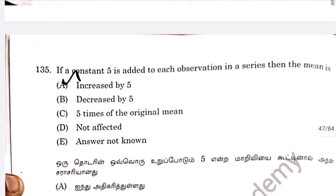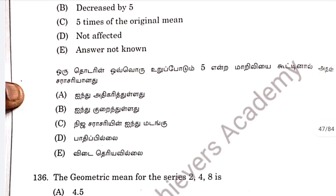Question 135: this is a standard property of arithmetic mean. If a constant 5 is added to each observation, the mean of the series increases by 5. Option E is correct.